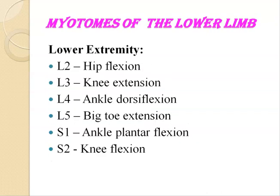For the myotomes of the lower extremity: L2 produces hip flexion, L3 knee extension, L4 ankle dorsiflexion, L5 great toe extension, S1 ankle plantar flexion, and S2 knee flexion.